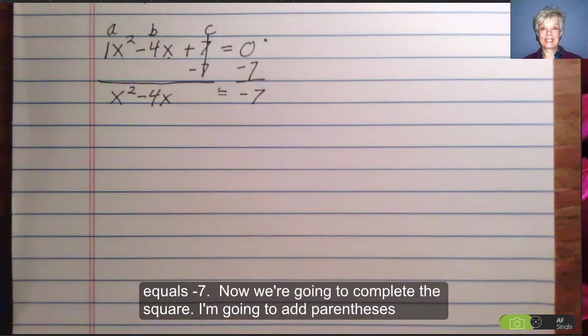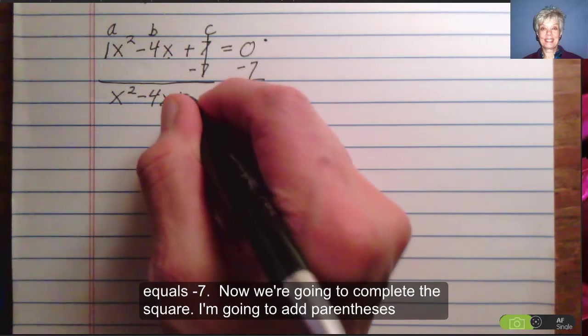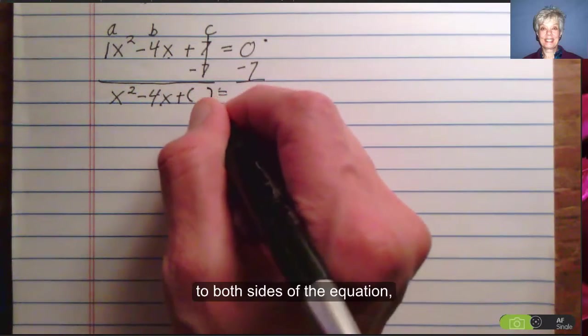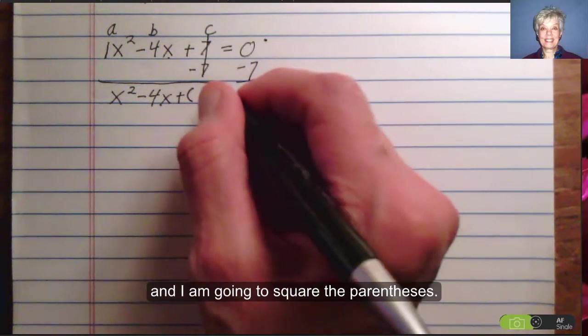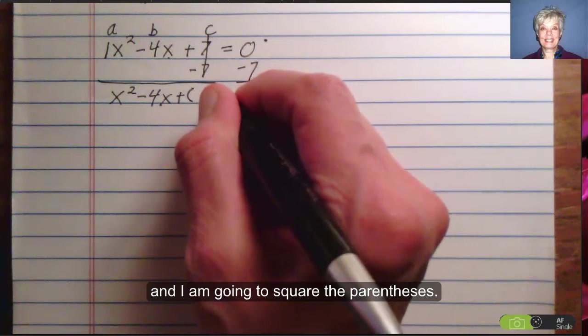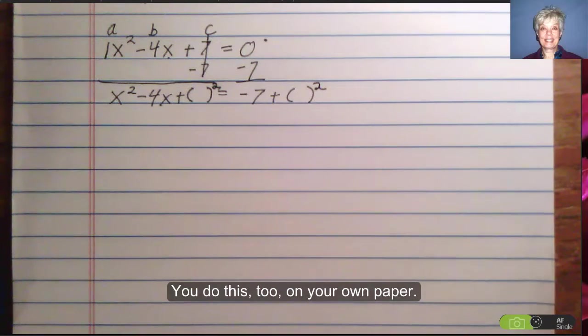Now we're going to complete the square. I'm going to add parentheses to both sides of the equation, and I am going to square the parentheses. You do this too on your own paper.